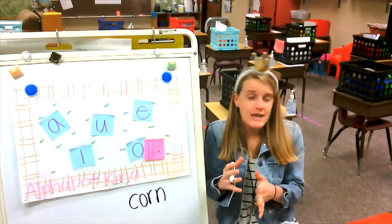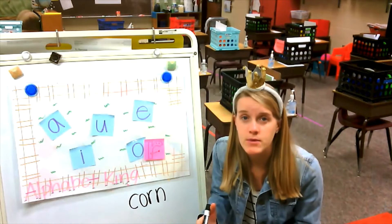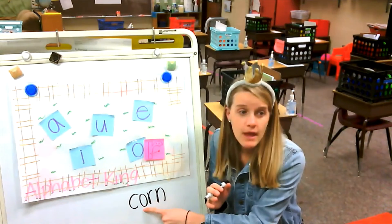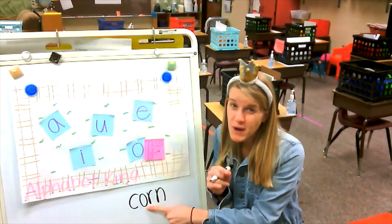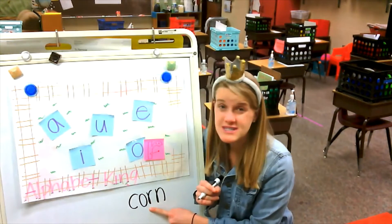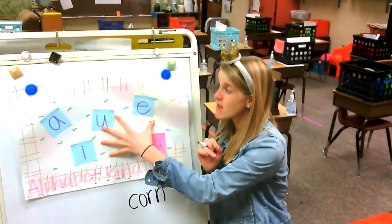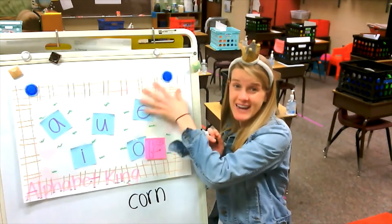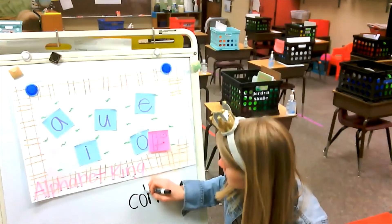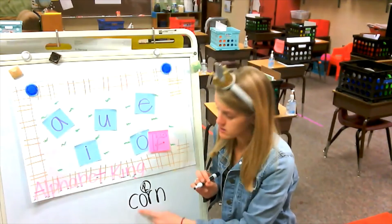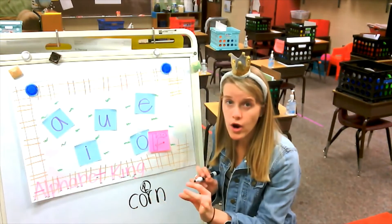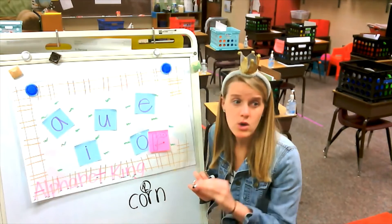When we're looking to figure out what syllable type a word is, you look at the vowel and then look at what's behind it. Immediately, you might want to say this is a closed syllable, but it's not, because the R is behind it. So it's actually an R-controlled syllable. COR, N, CORN.